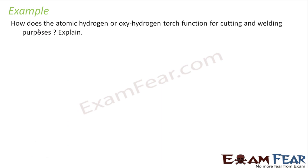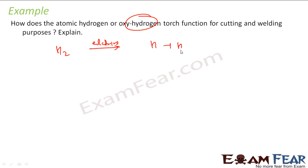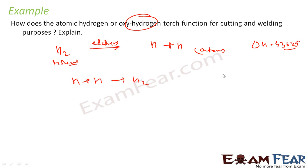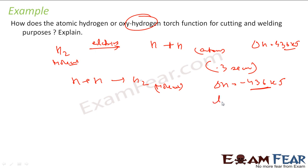How is the atomic hydrogen torch used for cutting and welding? When you pass high-voltage electricity through H₂, it breaks into H atoms. These atoms have a very short lifespan — about 0.3 seconds. The moment the electric force is gone, the H atoms recombine to form H₂ molecules, releasing a very large amount of heat energy. This intense heat is used for cutting and bending metals.